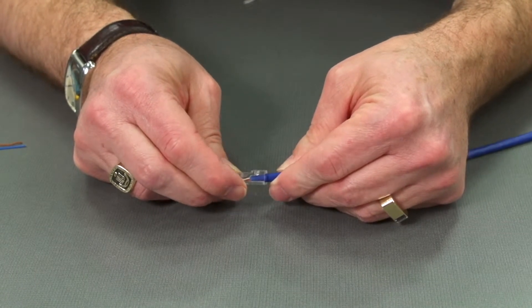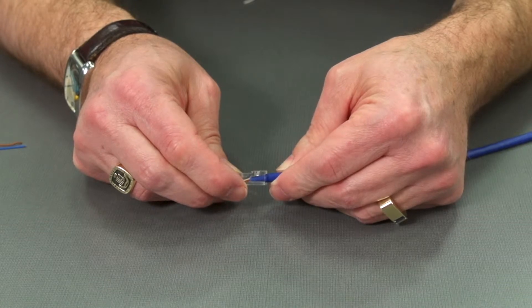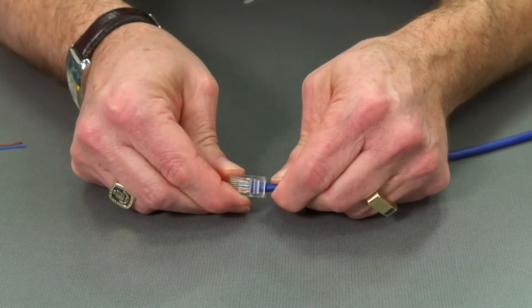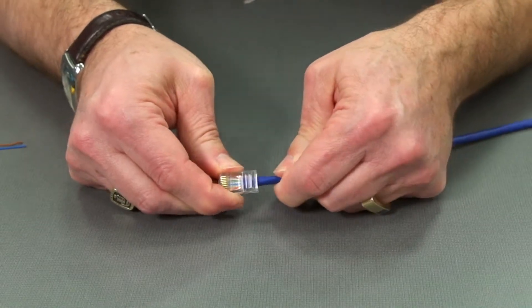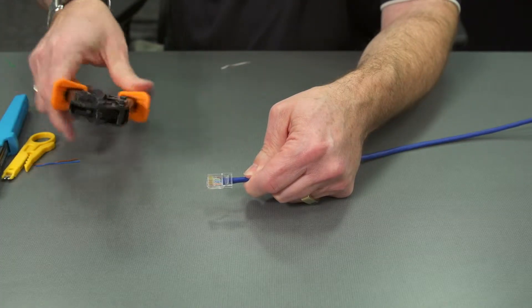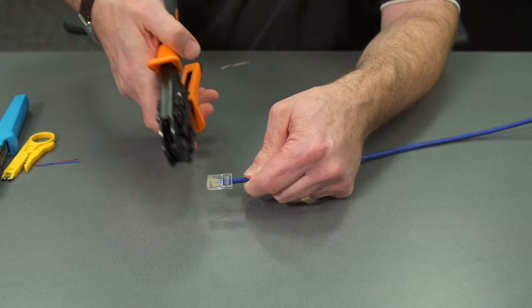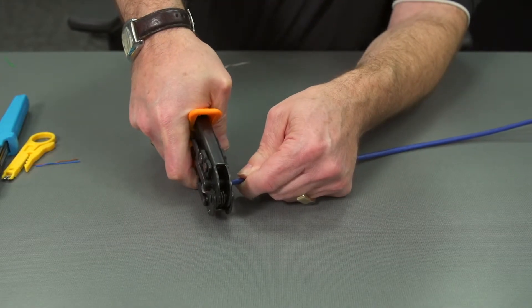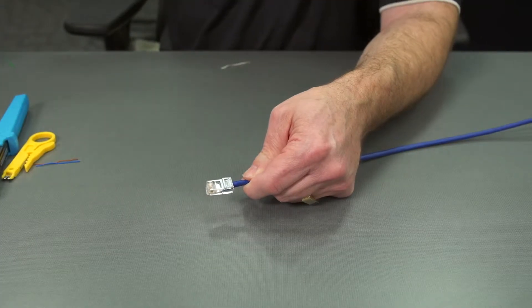So again, white orange, orange, white green, blue, white blue, green, white brown, and then brown. Now that that looks good, I can use my crimping tool. Squeeze down. And that's our connection.